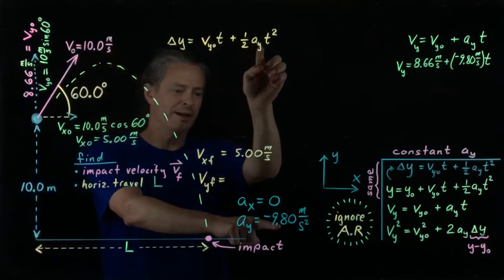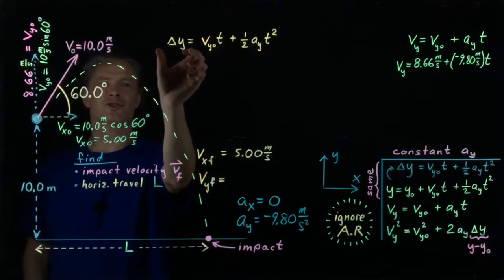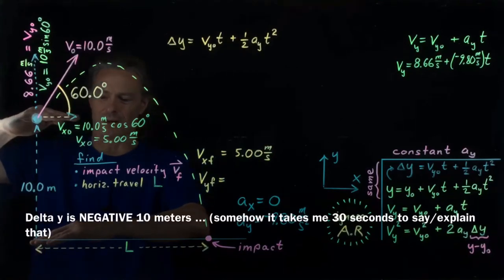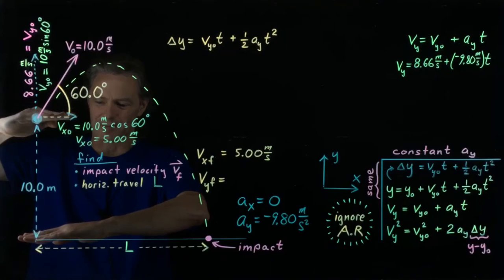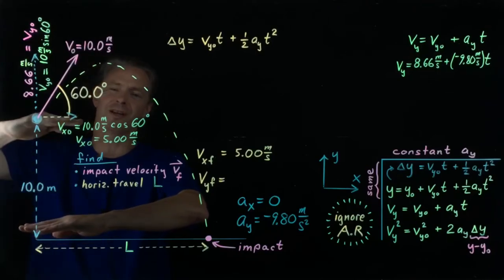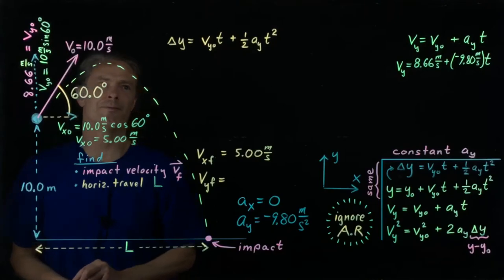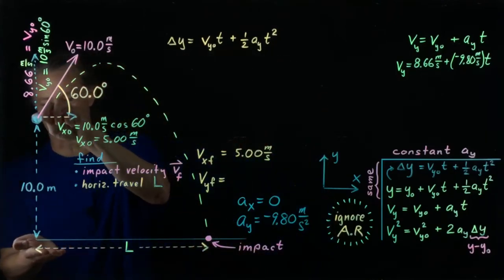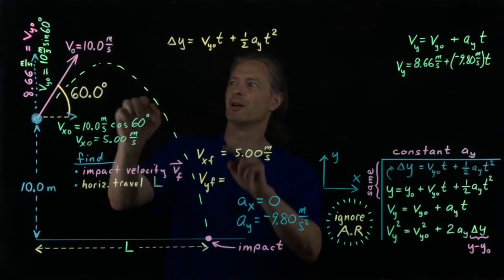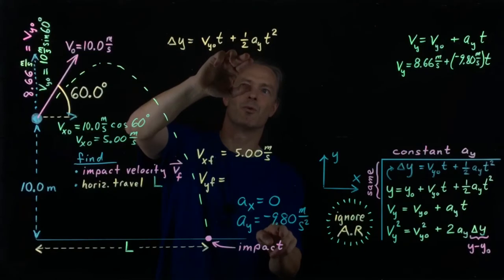Looking at this equation, we know a sub y and we know v sub y zero. We're looking for the time t, and we also know delta y. Delta y is the change in y from this initial instant to the final instant. The projectile starts 10 meters above the ground and ends at ground level, so the change in y is negative 10 meters — negative because up is the positive y direction. So we can plug in negative 10 meters for delta y, 8.66 m/s for v sub y zero, and negative 9.8 m/s² for a sub y.